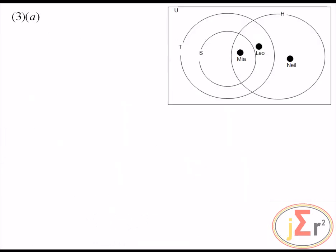The Venn diagram represents information on the type of games played by members of a youth club. All members play at least one game, meaning nobody in the club is represented outside the circles in the Venn diagram. Everyone is in at least one of the sets represented by the circles.